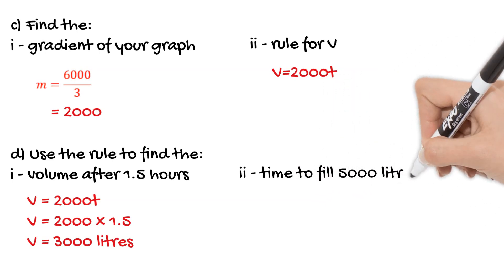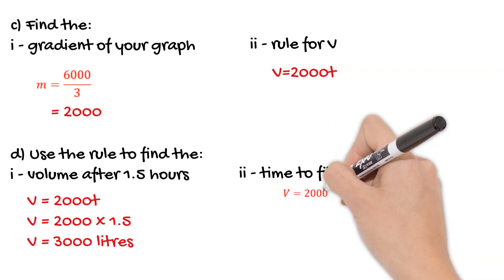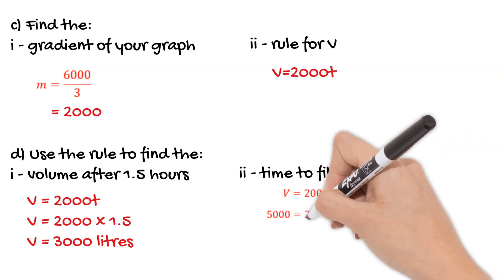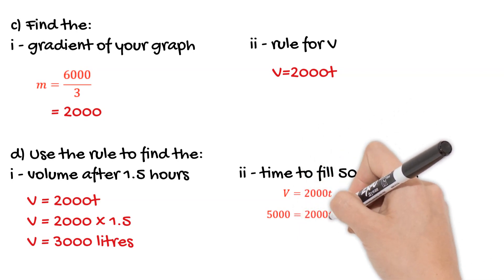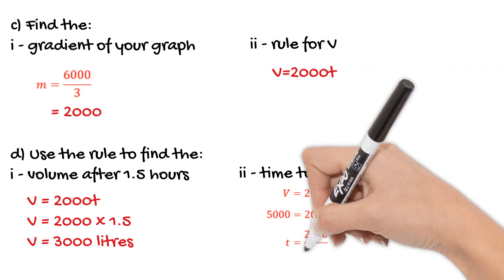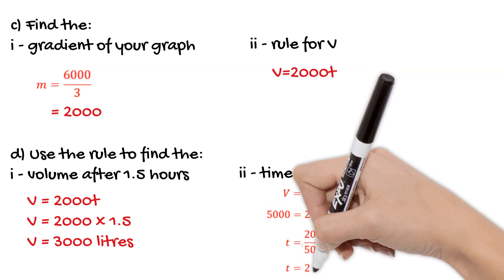And then the second part of that question asks us to find the volume. So this time instead of subbing in a t value, we're going to sub in a V value. So we know that 5,000 is equal to 2,000 multiplied by t. So of course using inverse operations, t is equal to 2,000 over 5,000, which gives us a t value of 2.5.